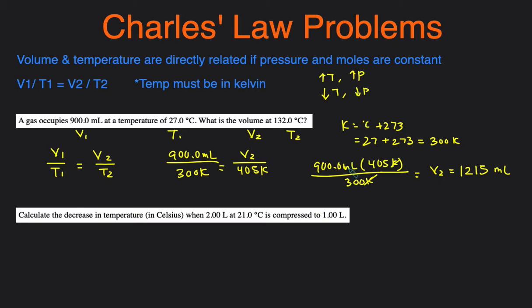So V2 will equal 1,215 milliliters. Let's check if that makes sense based on Charles' Law. So we can see that the temperature went up, because it went up from 27 to 132. So if the temperature goes up, the volume should increase as well. And it did, it went from 900 to 1215. All right, let's take a look at the next example.